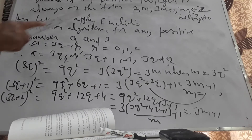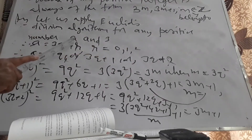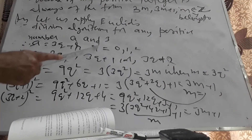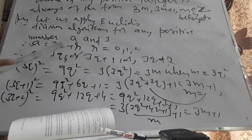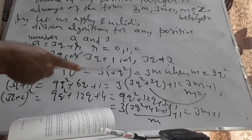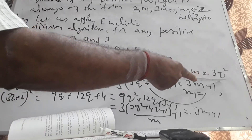Let me repeat. Let us apply Euclid's division algorithm for any positive integer a and 3. A will be written of the form 3Q+R, where R is 0, 1, or 2. So a will be either 3Q, or 3Q+1, or 3Q+2.